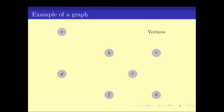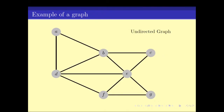Pictorially, we draw graphs as blobs representing vertices a, b, c, d, e, f, g, with edges represented by lines drawn between corresponding vertices. So a,d is an edge whereas a,c is not an edge — this is called an undirected graph. We may also have weights on these edges, giving a weighted undirected graph. When the binary relation is not symmetric — meaning a,d is not the same as d,a — we represent it using arrows.